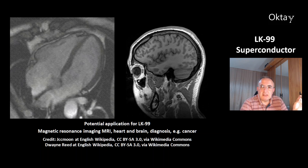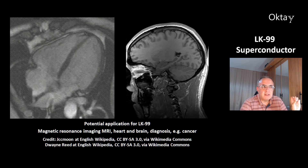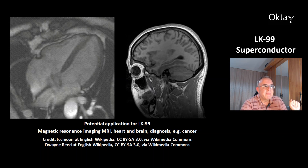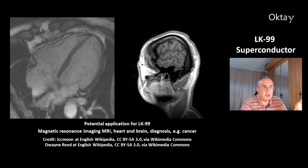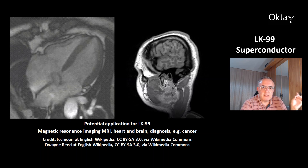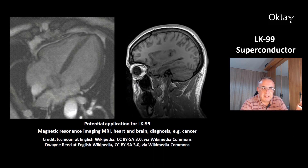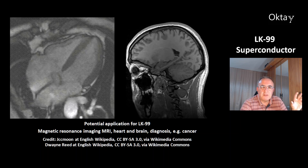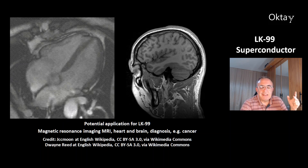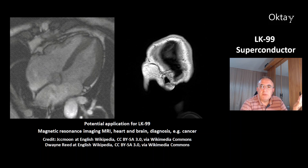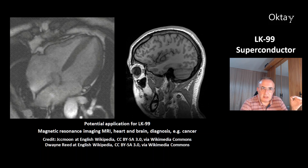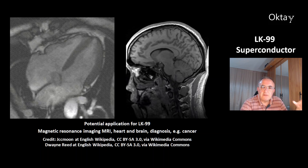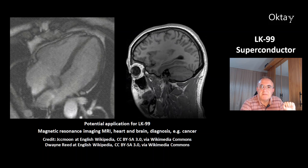These are two important potential applications for LK99. You could make wires from this material. You could use it for magnetic resonance imaging — MRI — which is very important for the diagnosis of diseases like cancer. On the left is a movie of a beating heart, and on the right are layers of the human brain. These images are very important for locating cancerous tumors, which is the first step in cancer diagnosis and treatment.